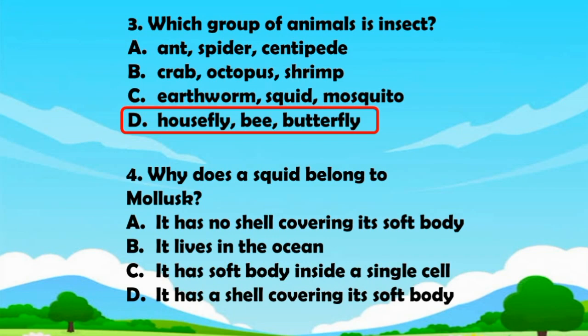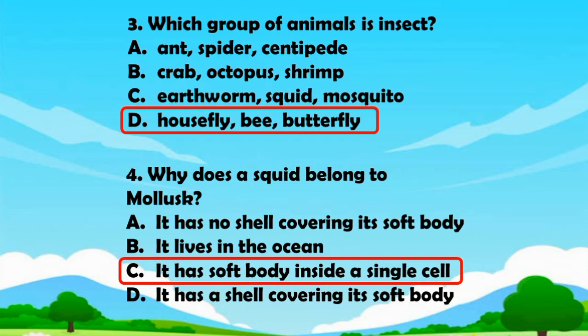Question number four. Why does a squid belong to mollusk? A. It has no shell covering its soft body. B. It lives in the ocean. C. It has soft body inside a single cell. D. It has a shell covering its soft body. The answer is Letter C. It has soft body inside a single cell.